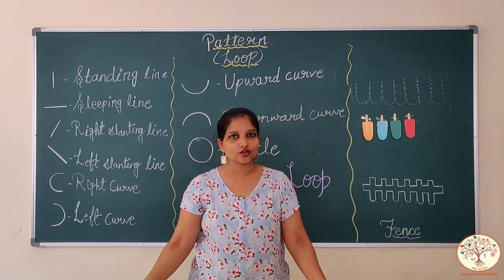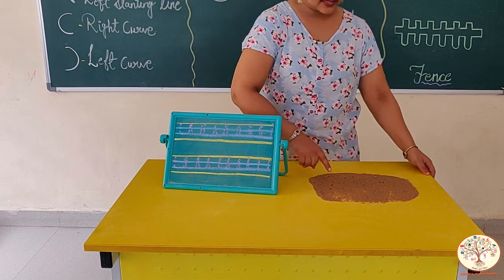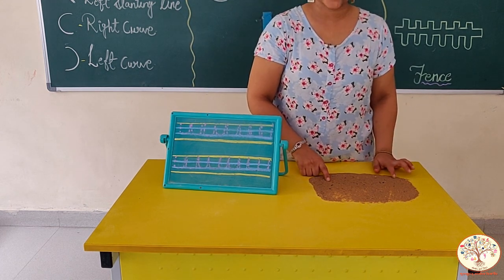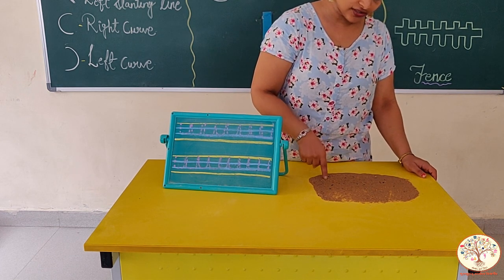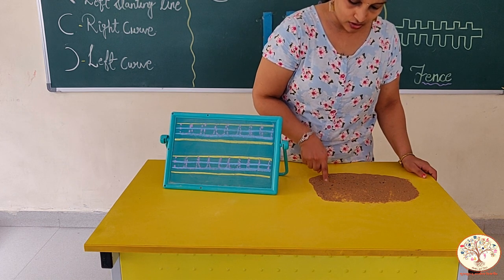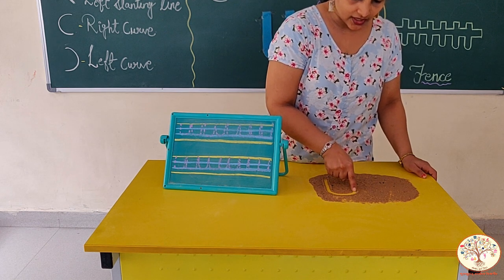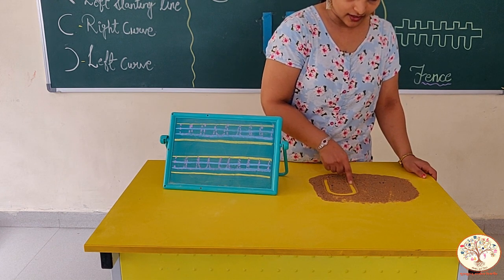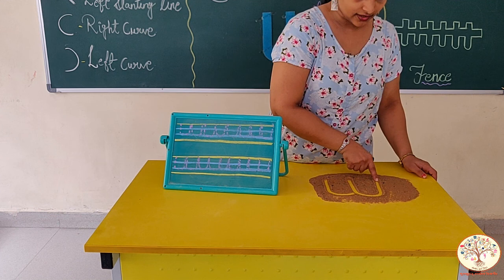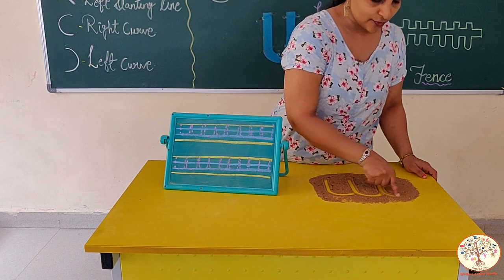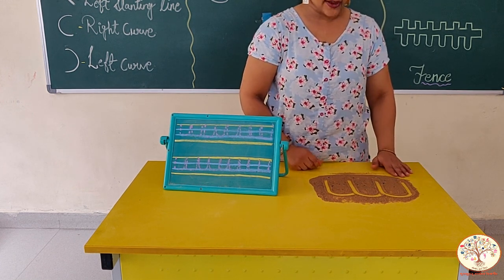Now we will draw on the sand. Put your pointer finger on the sand, then draw a standing line, then up curve, then again standing line. Then standing line, up curve, once again standing line. Again standing line, up curve and once again standing line. This is a loop pattern.